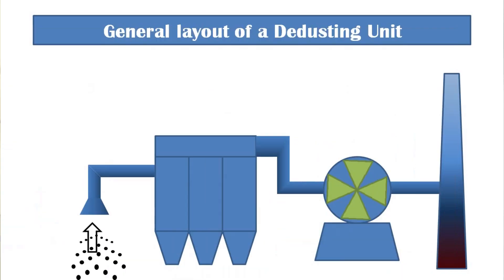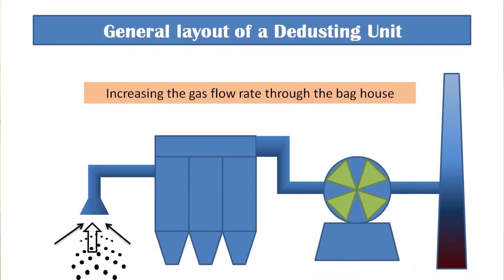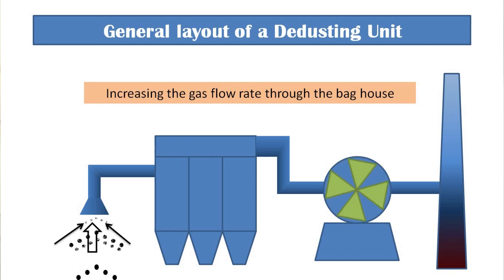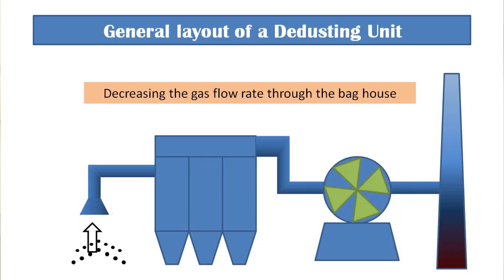Do you need to increase the flow rate across your filter bags? This generally happens when you increase the overall production, or there is a reason for an increase in the production of fume and dust. The reverse can also be true. Do you need to reduce the flow rate across the filter bags? This may happen when you are operating your plant at a diminished or under capacity, or you have already increased the flow rate and now you want to rectify it.